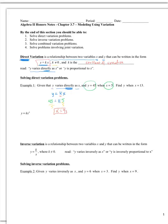We take that constant of variation and substitute it back into the variation equation, giving us y equals 9 times x. That is your variation function. We've also been given x equals 13, and we want to find y. Substituting into the variation function: y equals 9 times 13, so when x equals 13, y is 117.